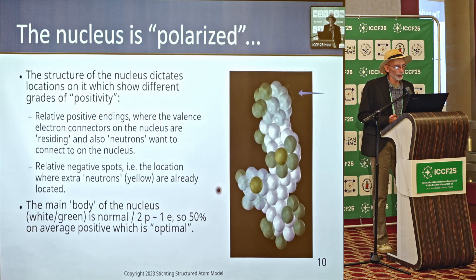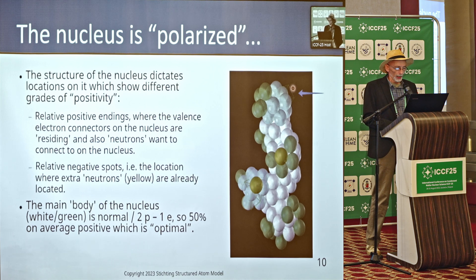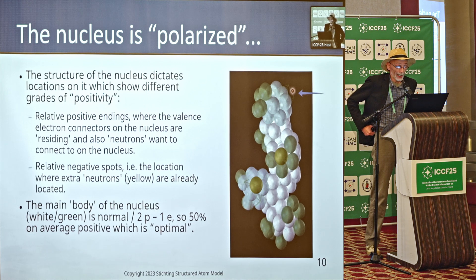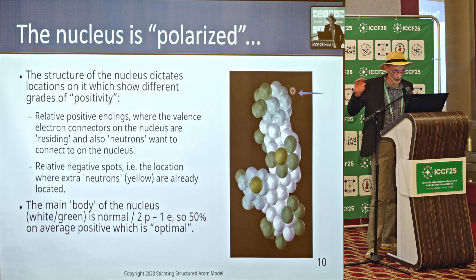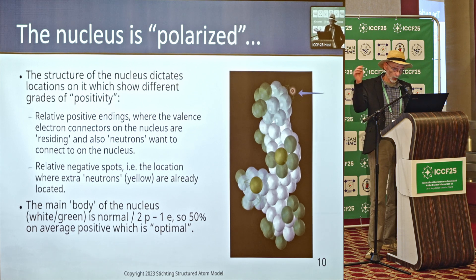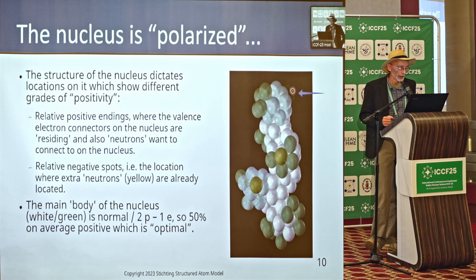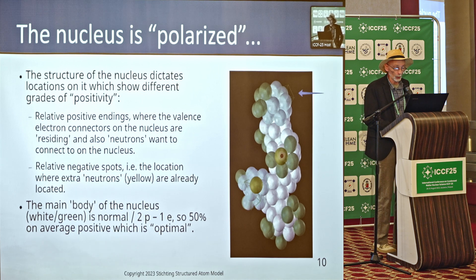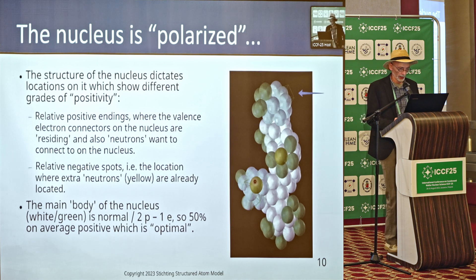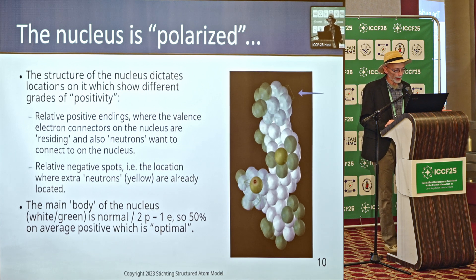So the nucleus is polarized. The structure of the nucleus dictates locations that show different grades of positivity. The relatively positive endings are where the valence electron connectors of the nucleus reside — that's where the chemistry connection is made. This is where the relatively negative neutrons want to go and land. Then we have relatively negative spots where a neutron is already added, becoming quite negative — at least relatively. Those are the yellow spheres where I've added two neutrons. One is essential for the structure; the other, on the left, is optional. The main body of the nucleus is white-greenish, representing a normal ratio of two protons to one inner electron.